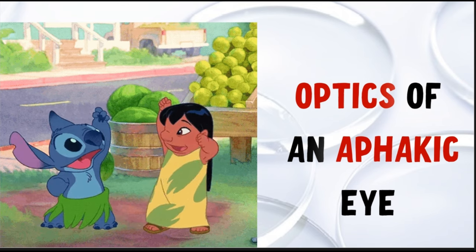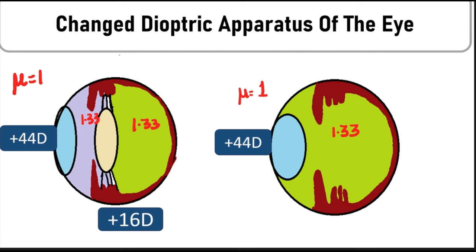In a normal eye, the cornea has a power of about 44 diopters and the lens about plus 16 diopters. In an aphakic eye, the dioptric apparatus is reduced to a single refractive surface — only the cornea — so the power of the eye decreases. The lens that separated the aqueous humor from the vitreous humor is now gone, and they act together with a uniform refractive index.